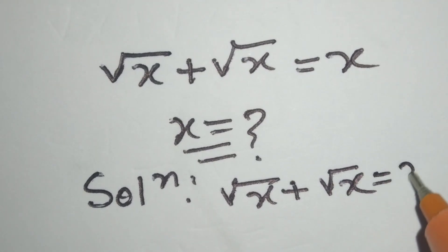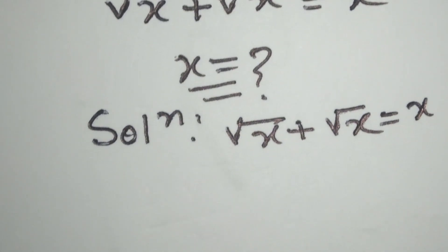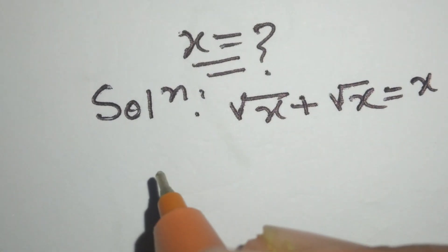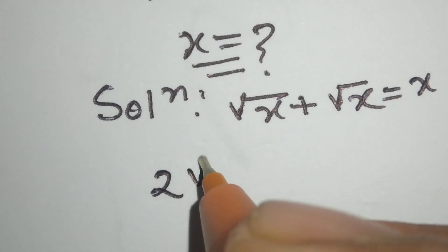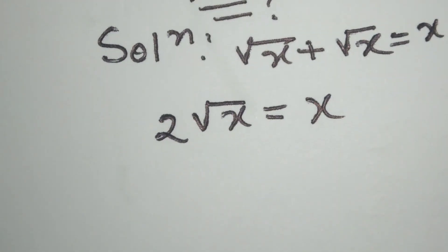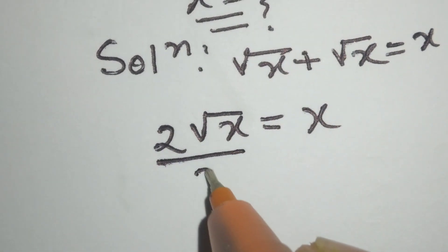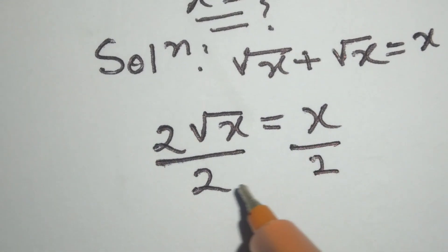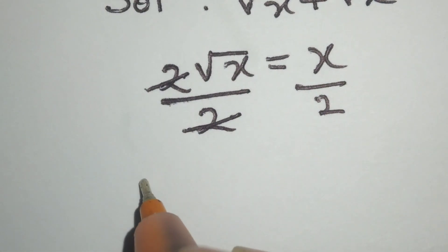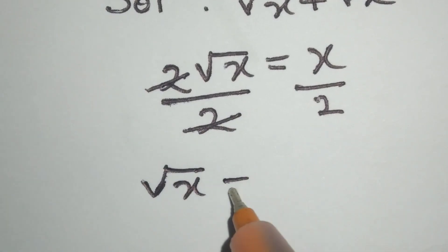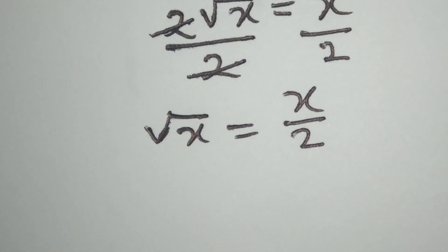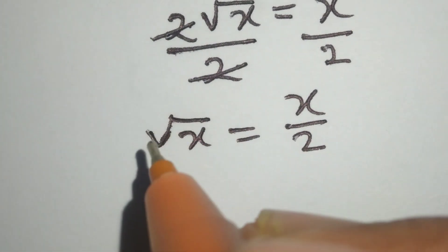We can write: square root of x plus square root of x is equal to 2 times square root of x, which equals x. Now we will divide both sides by 2. The 2s cancel, leaving square root of x is equal to square root of x over 2. Now we will take the square of both sides.